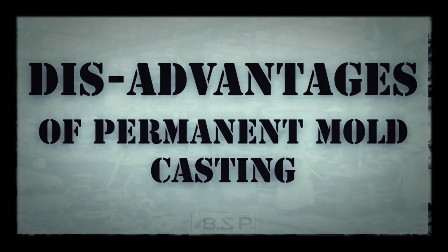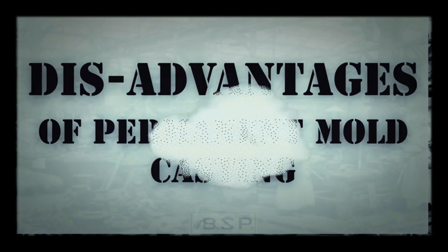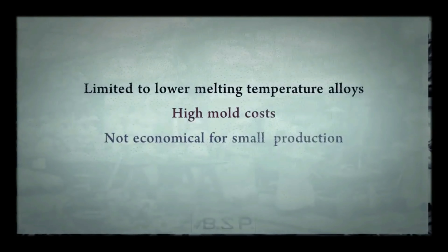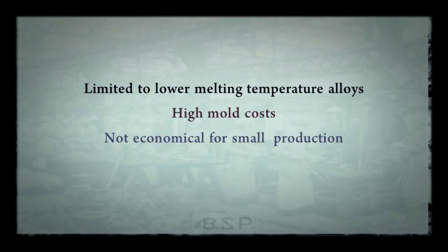The disadvantages of permanent mold casting are: it is limited to lower melting temperature alloys, meaning we cannot cast alloys which have high melting temperatures. High mold costs make it not economical for small production runs, as the initial cost is very high compared to other casting methods.